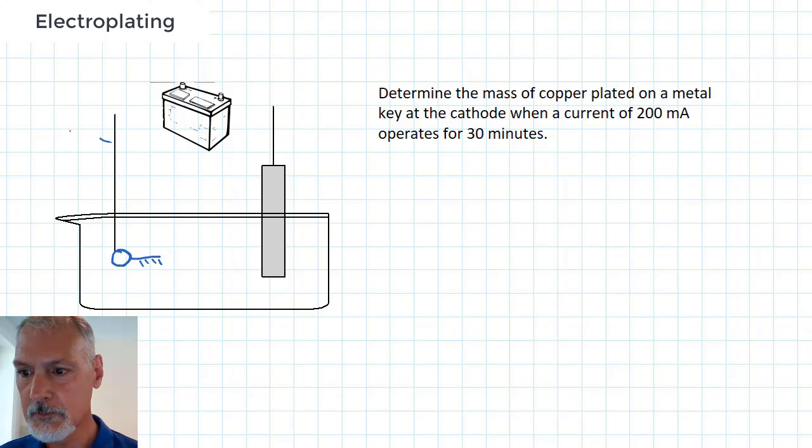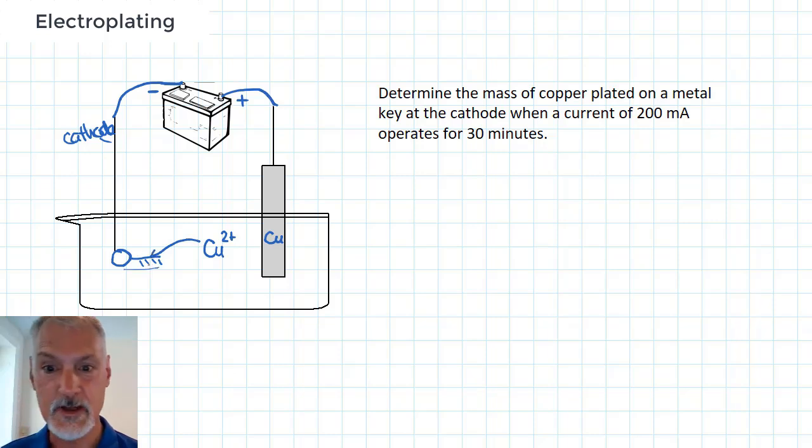So I would hook that metal key up to the cathode, connect that to the negative terminal of my battery. The positive terminal of my battery would be connected to a copper rod, and I would have a solution that contains copper ions in it, and those would move over here, pick up electrons, and turn into solid copper on the surface of my key.